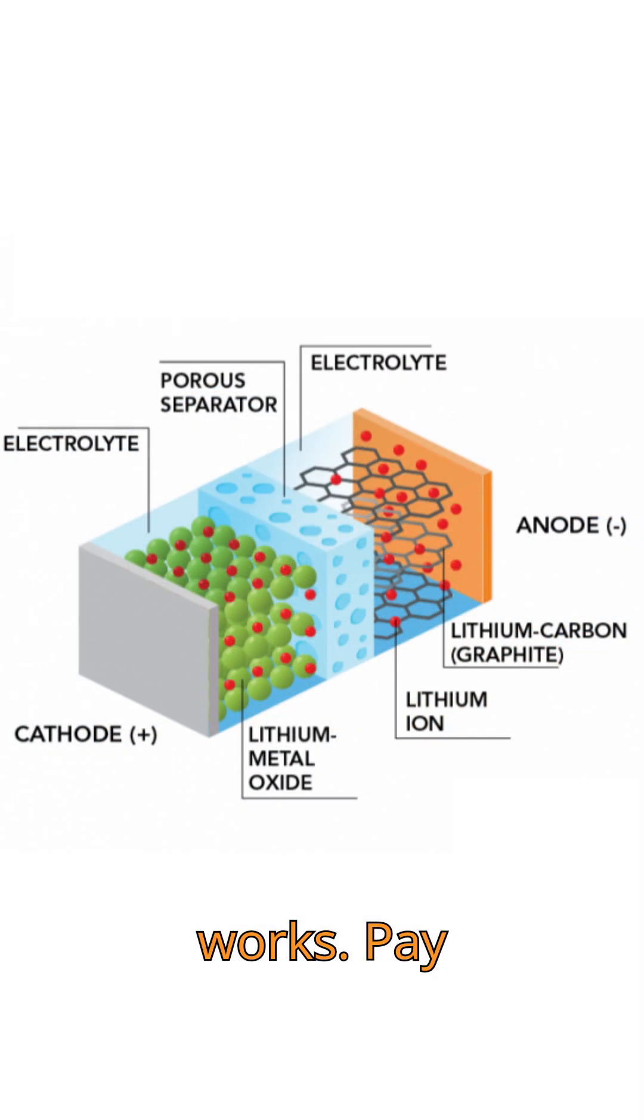How the magic cell works. Take attention, there are four fundamental parts inside. The cathode, the positive electrode, this is the source of the lithium ions. The anode, the negative electrode. This is most often made of graphite, and it receives the ions during charging.